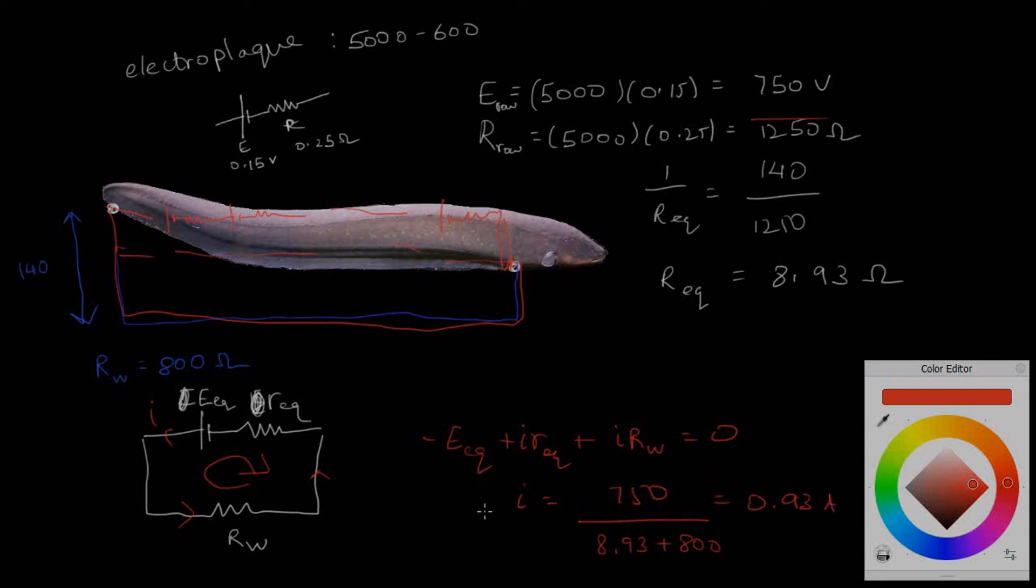Very close to 1 amp—potentially lethal, can kill. Extremely severe current. So if a tiny little fish happens to just wander around here and 0.93 amps goes across it, extremely lethal current results in instant death or a very painful stun.